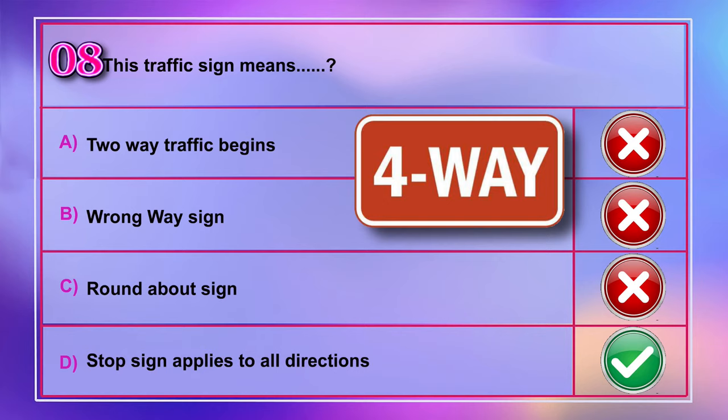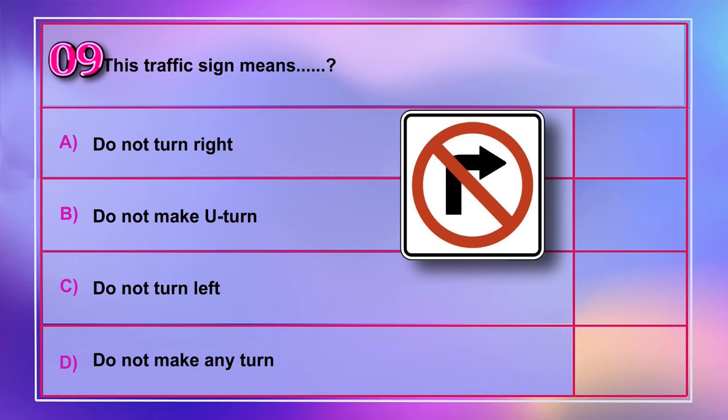Question number 9: This traffic sign means A) do not turn right, B) do not make a U-turn, C) do not turn left, D) do not make any turn. Correct answer is A: do not turn right.